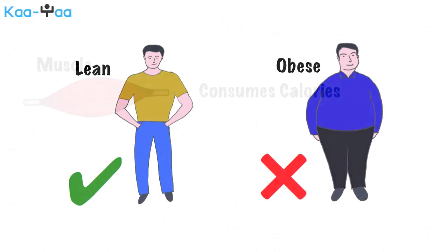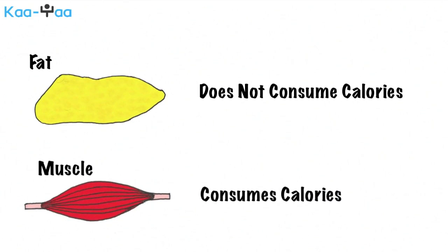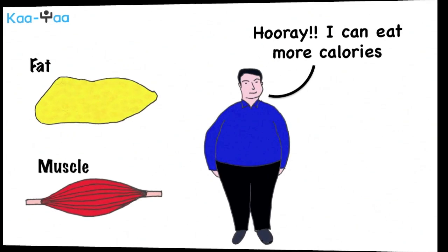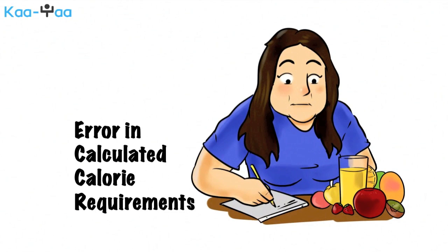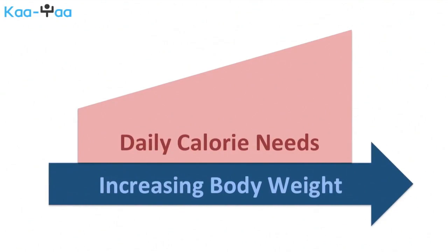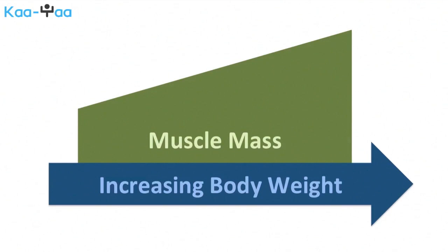Unlike muscles, fat does not consume any calories. Hence, an obese person erroneously calculates a higher daily calorie requirement than what they actually need. This is exactly what happened to Amy. The common formula she used is inherently flawed — it wrongly assumes that your daily calorie needs increase with your body weight. In reality, your daily calorie needs increase with your muscle mass and not your body weight.